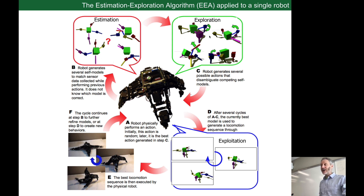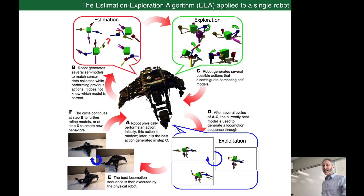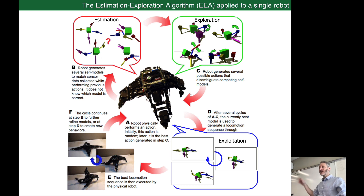One evolutionary algorithm tries to estimate the robot's state — how the robot is put together, and possibly estimate the robot's environment, though we didn't tackle that in this first experiment. A second evolutionary algorithm exploits the evolved or estimated self-model to evolve a neural controller that is then transferred to the physical robot. As the robot is trying to learn about itself, it alternates back and forth between the estimation and exploration evolutionary algorithms.